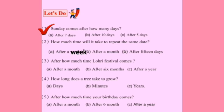We will tick on option B, after a month. Sum number three: After how much time does the Lohri festival come? A. After a month. B. After 6 months. C. After a year. Dear students, we already read the calendar — Lohri festival comes after a year. We will tick on option C — after a year.